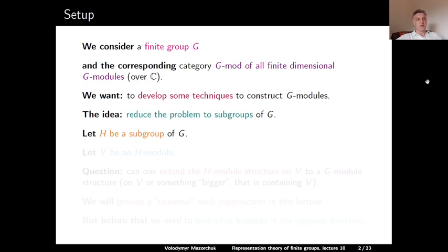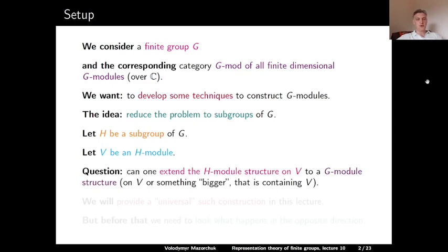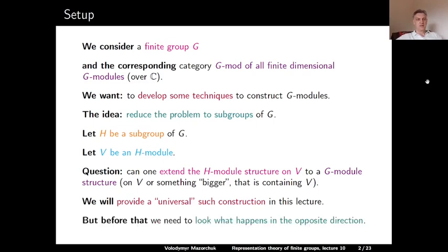Let H be a subgroup of G, and let V be an H-module. The question is: can one extend the H-module structure on V to a G-module structure, either on V or on something bigger that contains V? In this lecture, we will give a universal answer to this question — a construction of how to extend a module over a subgroup to a module over a group. But before we can do that, we need to look at what happens in the opposite direction.